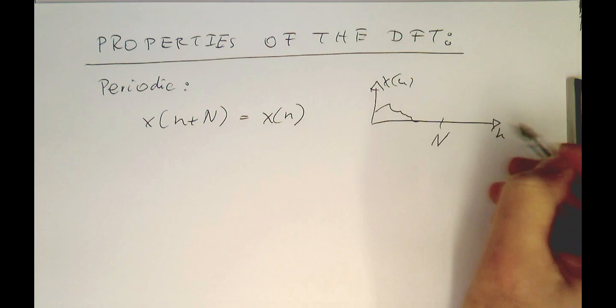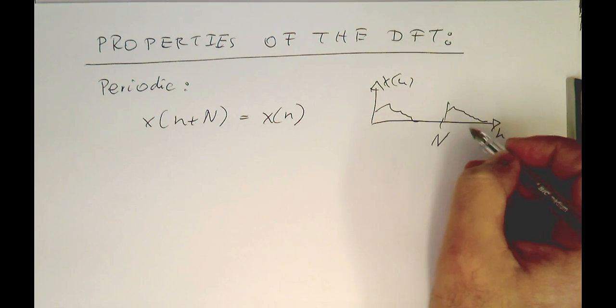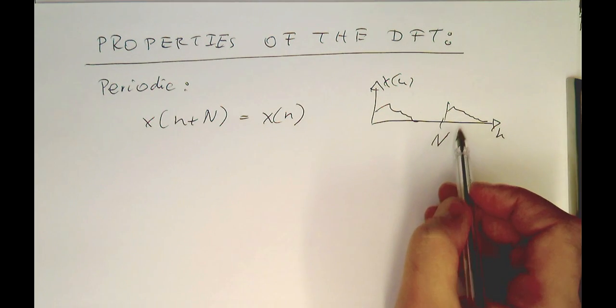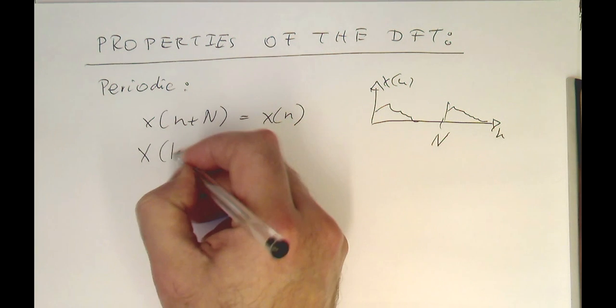If we have a signal here, then it will be coming back here. So we talked about this, and the overlap would cause trouble. The same also shows up in the frequency domain.